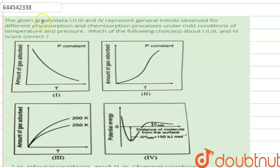The question says that the given graph or data 1, 2, 3 and 4 represent general trends observed for different physisorption and chemisorption processes under mild conditions of temperature and pressure. Which of the following choices about 1, 2, 3 and 4 is or are correct?